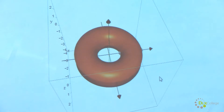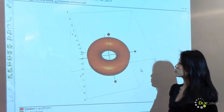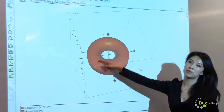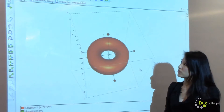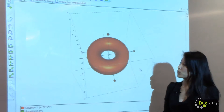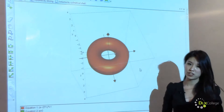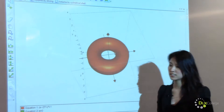As you can see, it will form a donut shape — this is a torus. The first method we will use to find the volume of this torus is by slicing.